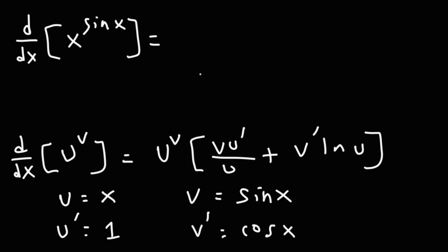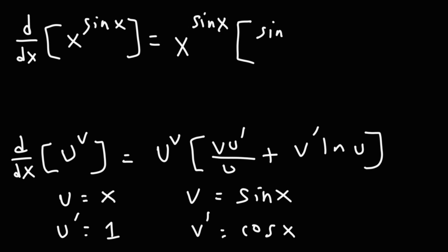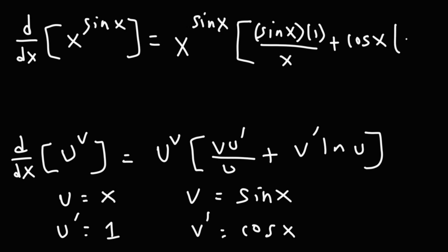So now we just put it into the formula. u raised to the v is x raised to the sine x, which is always what we start with, times v times u prime. So v is sine x, u prime is 1, over u, which is x, plus v prime, which is cosine x, times ln u, where u is x, so ln u is ln x. So the answer is x raised to sine x, times sine x over x, plus cosine x times ln x.